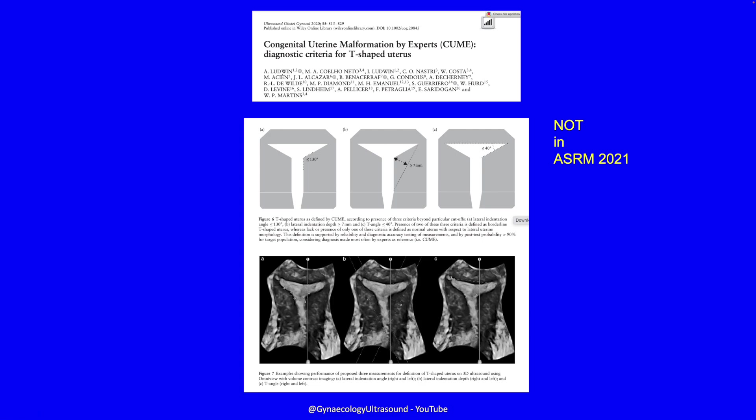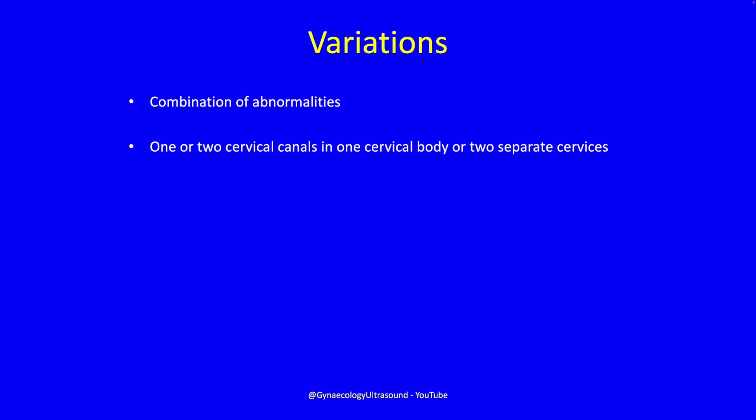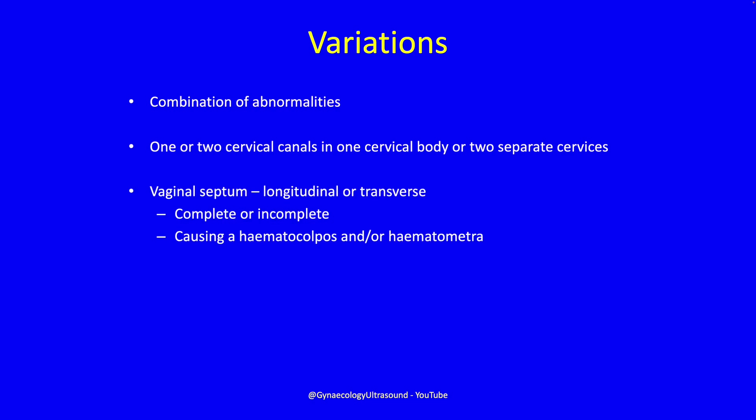What's not in the ASRM classification is the T-shaped uterus — there are more papers coming out right now, but it doesn't yet fit a classification system. There are also variations in abnormal uteri: you can have any combination — one or two cervical canals in one cervical body or two separate cervices. You can have a vaginal septum with any of these, which can be longitudinal, transverse, or oblique, and complete or incomplete. There can be a haematocolpos or haematometra. Always look for the association with endometriosis, especially if there's outflow obstruction and retrograde menstruation — and then endometriosis and adenomyosis.